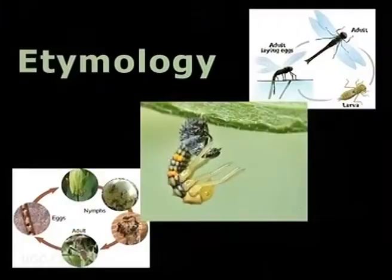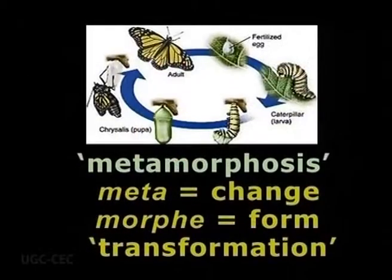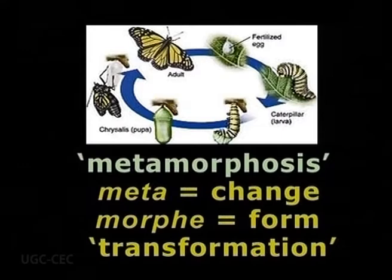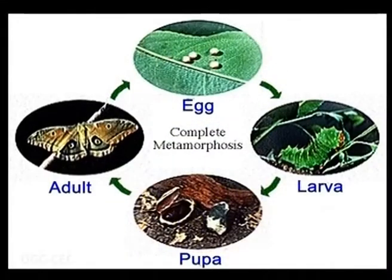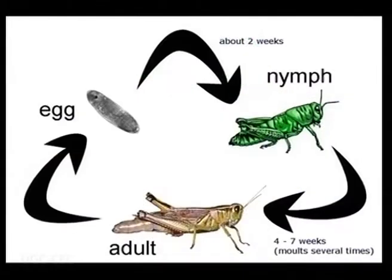The paragons of changes during life cycles are insects, and we are to discuss all this in this program on etymology. The word metamorphosis is derived from the Greek word for transformation. Metamorphosis in biology means the process of transformation from an immature form to an adult form in two or more distinct stages.